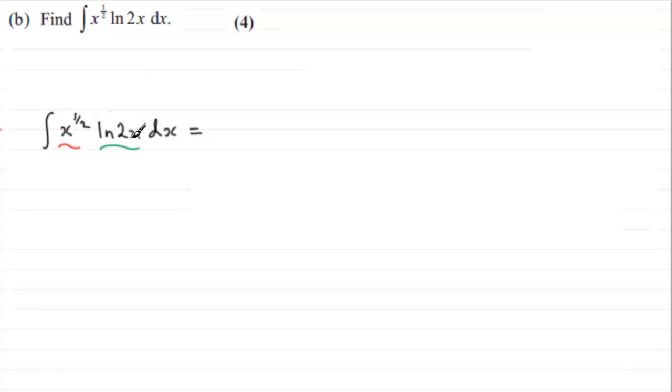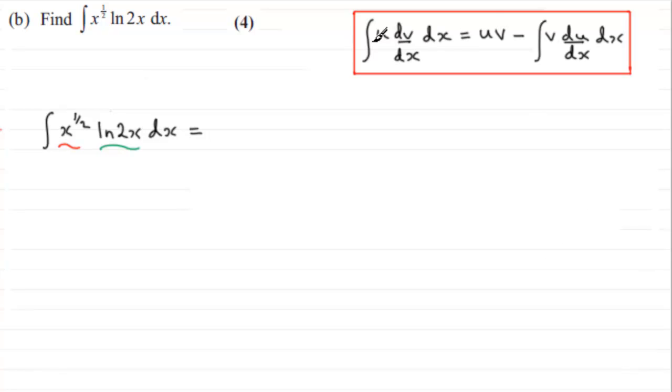And when you've got two functions of x being multiplied together that you cannot really expand, then this type of integral tends to be integration by parts.